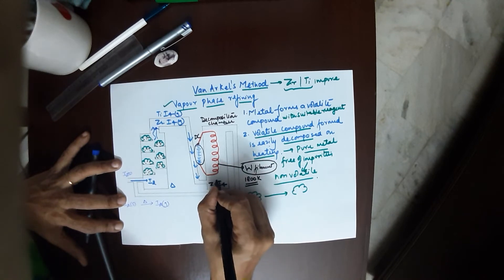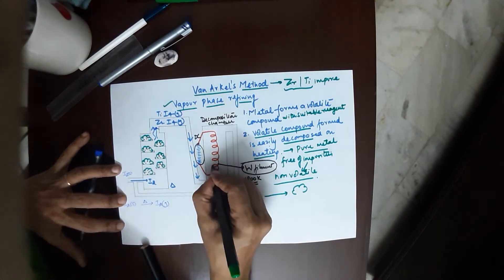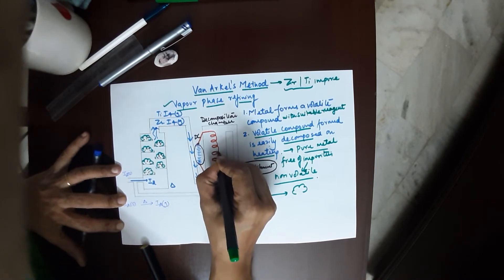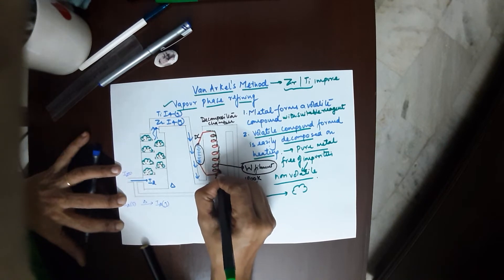When these compounds, the gaseous compound like zirconium iodide, reach here, they move up. The zirconium out of it starts getting deposited onto the filament because it decomposes and solidifies onto the filament. So your filament gets coated with pure zirconium.